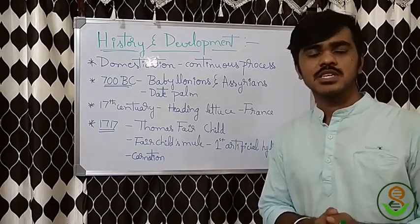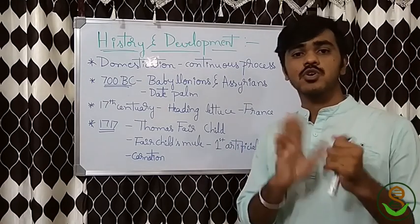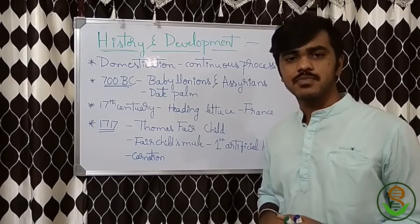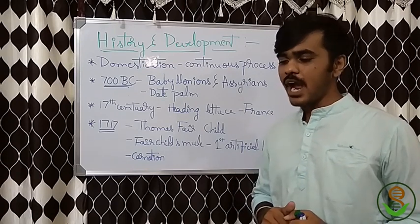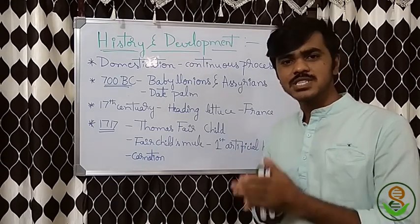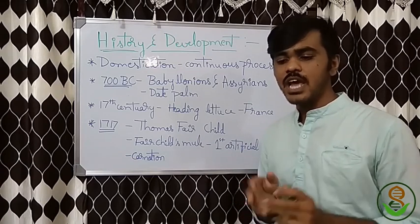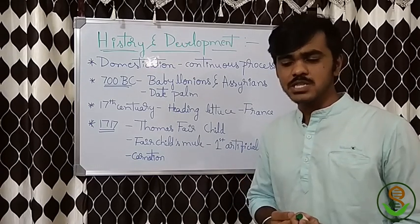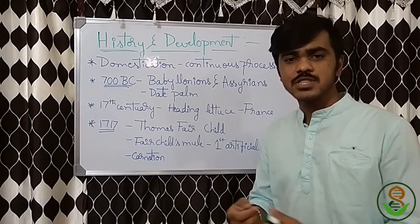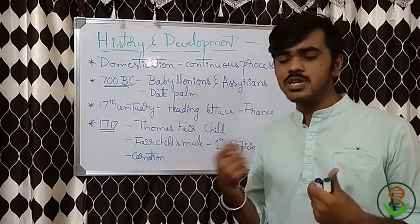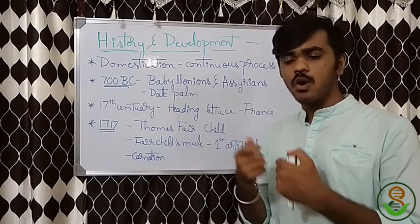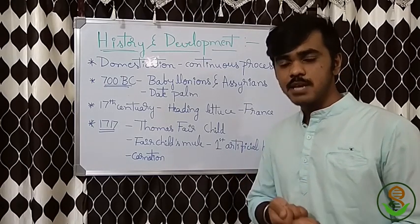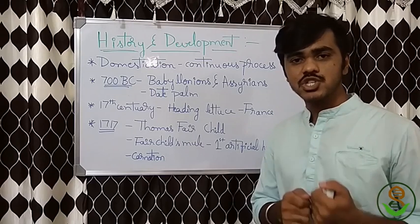For example, we can speak about dogs. In the initial days, dogs were wild. We brought them, domesticated them, and taught them how to be with us, how to react with humans, how to feed on our food, and how to live with us. The same thing applies to plants.